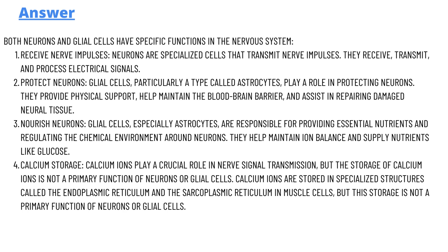Protect neurons: glial cells, particularly a type of cells called astrocytes, play a role in protecting neurons. They provide physical support, help maintain the blood-brain barrier, and assist in repairing damaged neural tissue.